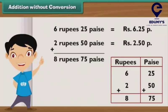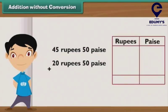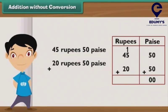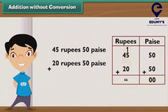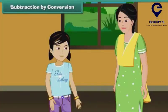Now take another example. Add 45 rupees 50 paisae and 20 rupees 50 paisae. Step 1: Add the numbers in the paise column — 50 plus 50 is equal to 100 paisae. We know that 100 paisae is equal to rupee 1. So, write 00 in the paise column and carry forward 1 to the rupee column. Step 2: Add the numbers in the rupees column — 1 plus 45 plus 20 is equal to 66 rupees. Write 66 in the rupees column. So, the answer is 66 rupees.